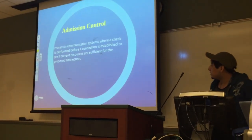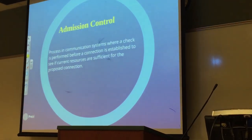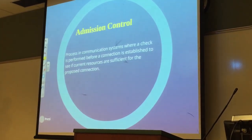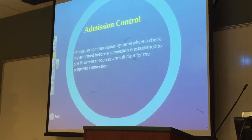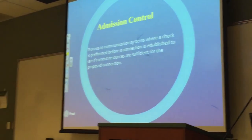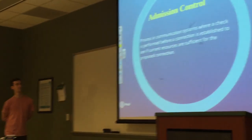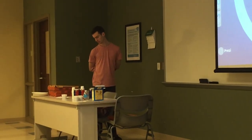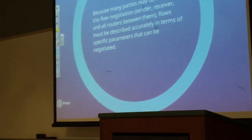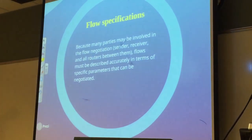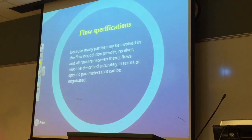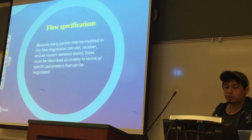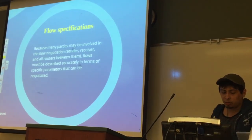Now going on to Admission Control. Basically, Admission Control is a process and communication system where a check is performed before a connection is established to see if the current resources are sufficient for the proposed connection. They do this by flow specifications. Because many parties may be involved in the flow negotiation — that means sender, receiver, and all routers between them — flows must be described accurately in terms of the specific parameters that can be negotiated.